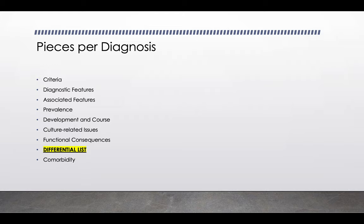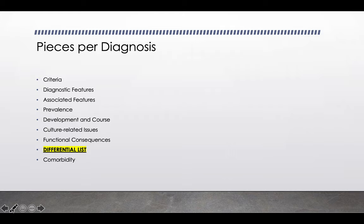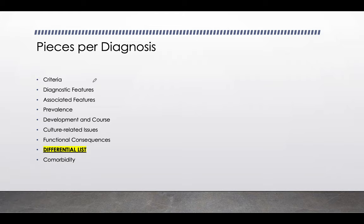For each diagnosis in your DSM, at minimum you'll see: criteria — the actual diagnostic criteria — and diagnostic features, which is a more narrative description of those criteria. For example, the criteria might say 'feel sad more days than not,' and the diagnostic features will expand that to 'feel sad, bummed out, apathetic.' It makes a narrative of the criteria.